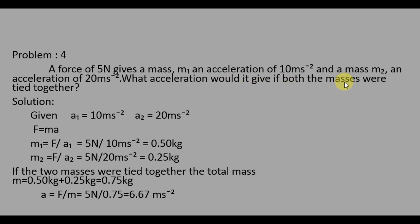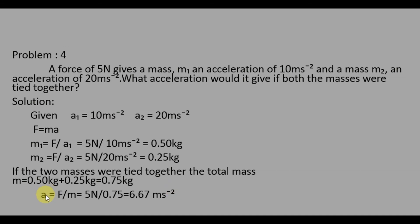When both masses are tied together, we add them: total mass = M1 + M2 = 0.50 + 0.25 = 0.75 kg. Then the acceleration A = F / M = 5 / 0.75. Dividing, we get A = 6.67 m/s². That is the acceleration when both masses are combined.